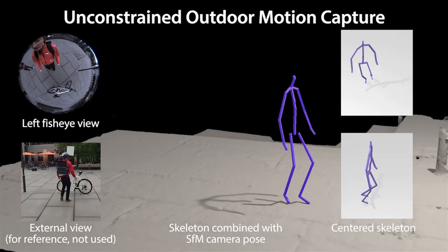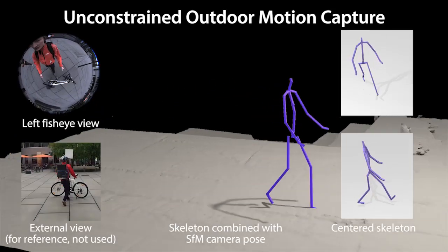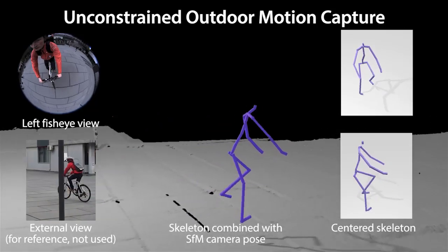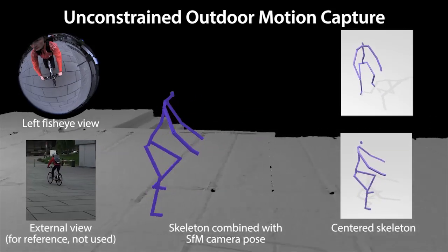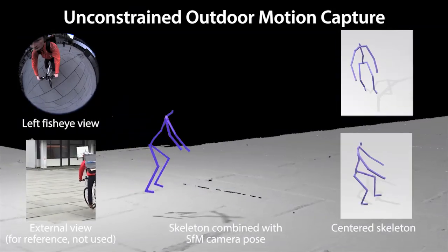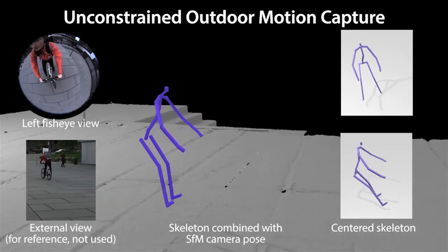Our EgoCap approach also enables capture of large-scale motions outdoors, such as this walking motion, or even cycling freely. In this example, the global camera pose is reconstructed with structure from motion. Capturing cycling motions would be extremely difficult with outside-in motion capture approaches due to the constrained recording volume.